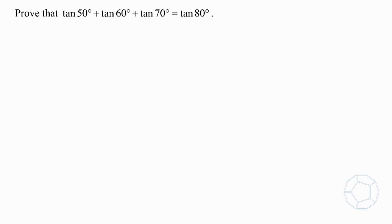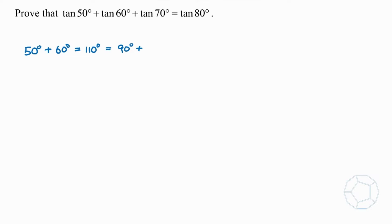First of all, we're going to group two terms on the left hand side. Let's take 50 degrees and 60 degrees. We'll see a couple of magic combinations of angles. We have 50 degrees plus 60 degrees is equal to 110 degrees, which is equal to 90 degrees plus 20 degrees.